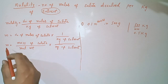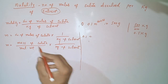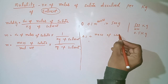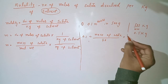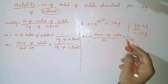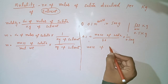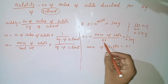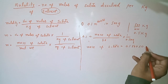Now molality is given as 0.1. We set up: 0.1 equals mass (unknown) divided by molecular weight of sodium hydroxide, which is 40, multiplied by one over 0.5 kg of solvent. Solving for mass: mass equals 0.1 multiplied by 40 multiplied by 0.5, which equals 2 grams.